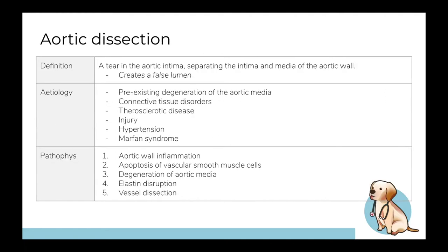Aortic dissection is a tear in the intima layer of the aortic wall. Blood enters between the intima and the media at really high pressure, separating these two layers. This can create a false lumen, leading to obstruction of aortic branches and ultimately ischemia.